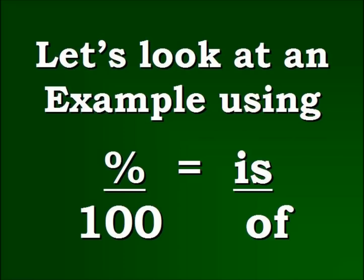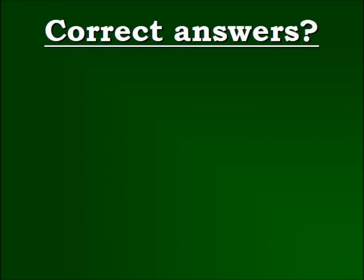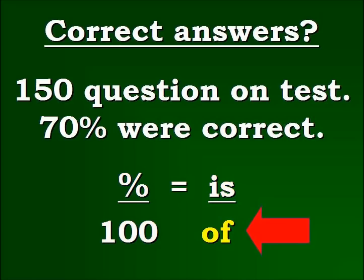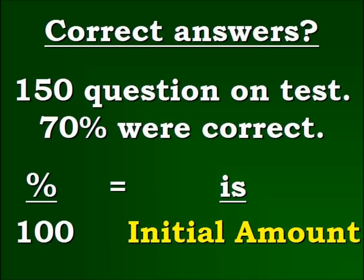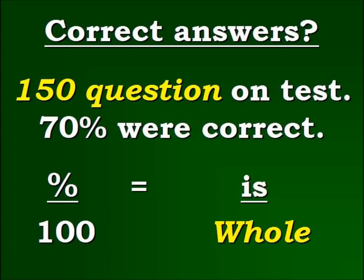Let's look at another example. 150 question test, the student got 70% correct. How many did the student get correct? So we have 150 question test, 70% were correct, we plug in our formula. We're going to begin with of, as we said before, this is the initial amount or the whole amount. Now the test was 150 questions, so we're going to plug that in there.